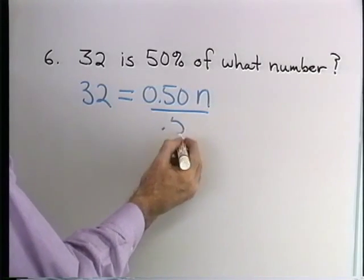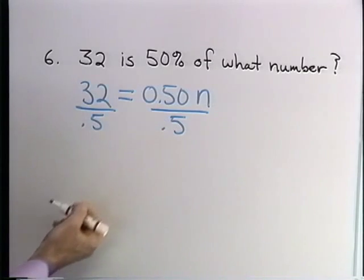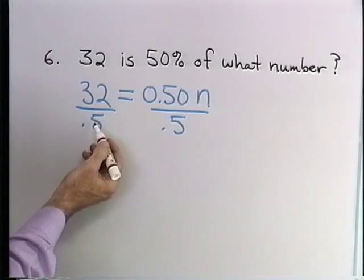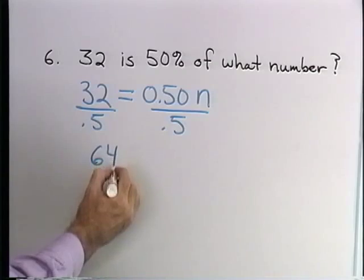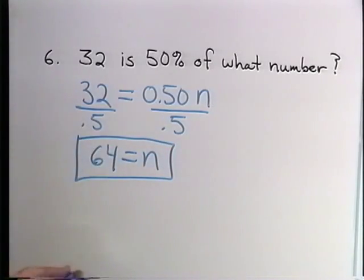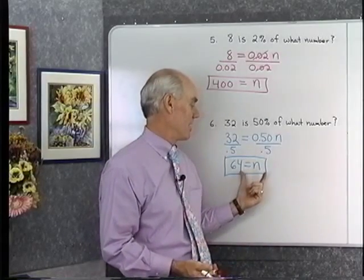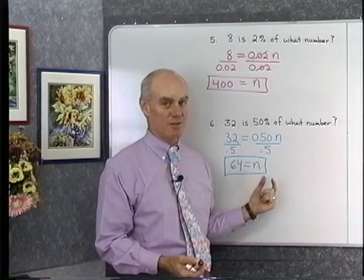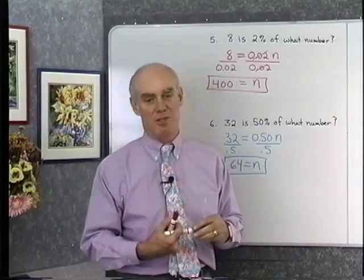32 is 0.5 times n. Divide both sides by 0.5. 32 divided by 1 half is going to be 64. So n is equal to 64. Even if we don't have an intuitive grasp of a percent, we're still going to come out with the right answers by doing the translations this way. There's a look at the basic percent problems.